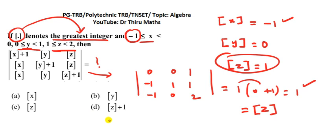We see the options, which one is best. Here C is the correct option. The answer is greatest integer function of z.